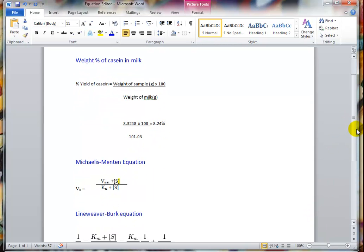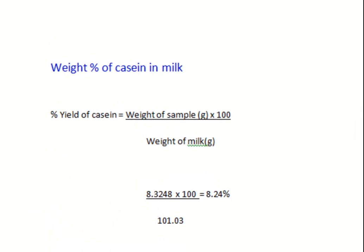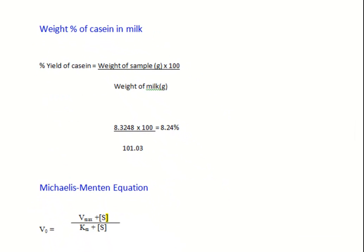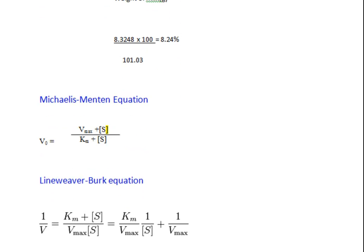There are some good ways and some bad ways, and I've got a couple of examples here. I've got some equations here, the weight percentage of casein in milk from the first year, and there's a couple of equations there, Michaelis-Menten and Lineweaver-Burk from the second year kinetics experiment.